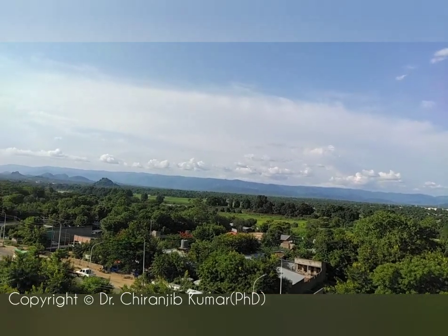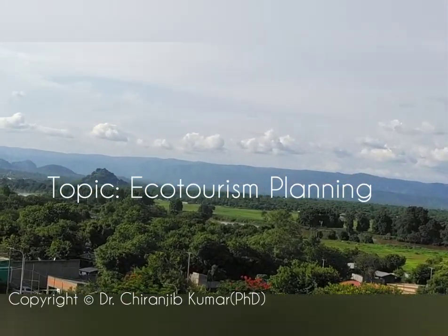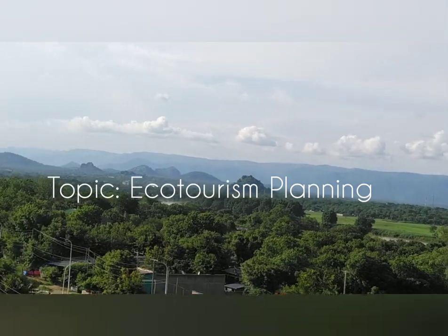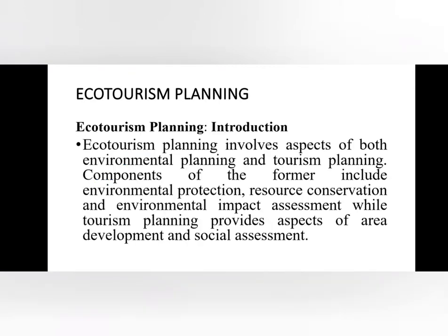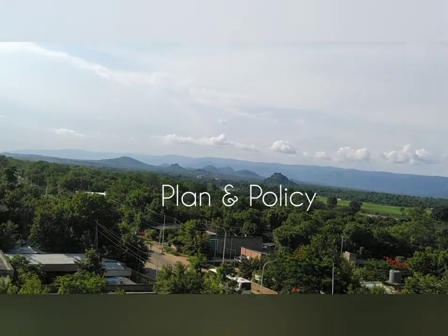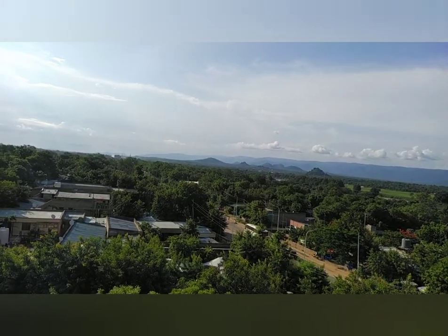Welcome back to the tourism lecture series. Today we are going to talk about ecotourism planning. Ecotourism planning generally consists of environmental planning and tourism planning. Environmental planning basically consists of conservation of natural resources as well as environment impact assessment. Similarly, tourism planning consists of area development and social assessment.